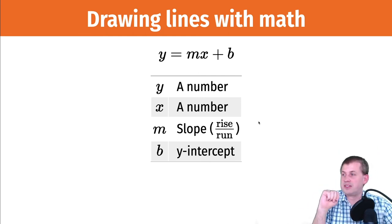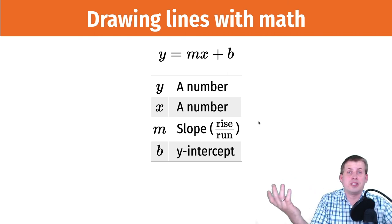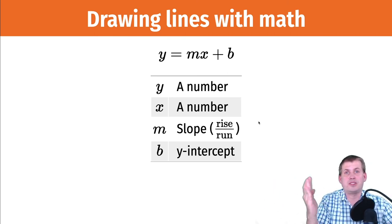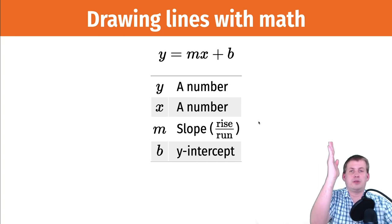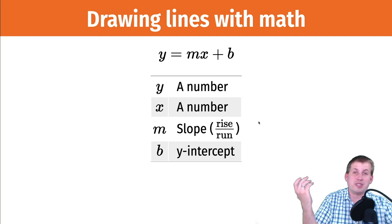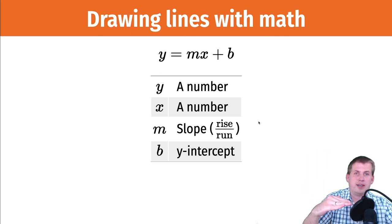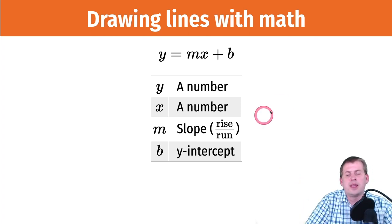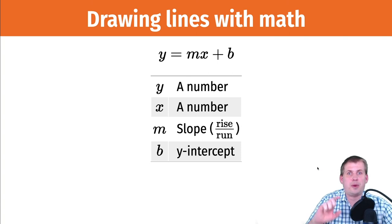If the slope is two, that can be written as two over one, so you go up two over one — that's a much steeper slope. If the slope is negative, that means you go down one over some amount. The b is the y-intercept, which is where the line starts at the y-axis.